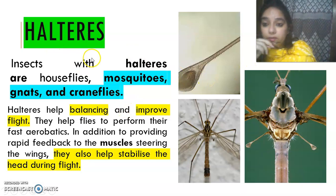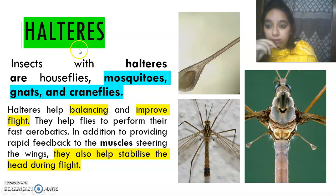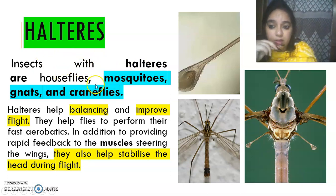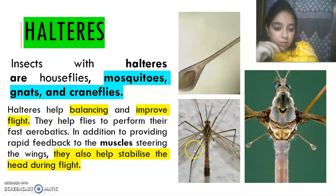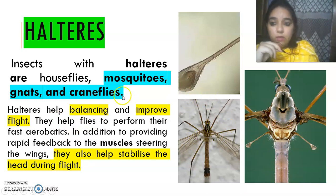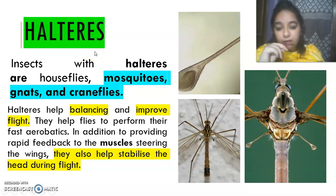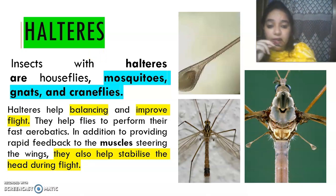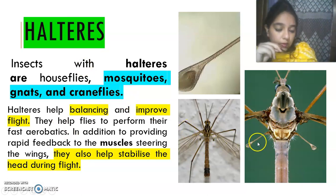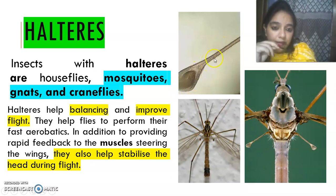The unique feature of Order Diptera is halteres. Insects with halteres include all insects found in Diptera — house flies, mosquitoes, gnats, and crane flies, any kind of true fly. The hind wing has been modified into a small club-like structure which is known as the haltere. Just like we had hemelytra in Hemiptera, elytra in Coleoptera, tegmina in Orthoptera, and scales in Lepidoptera, we have halteres in Order Diptera.